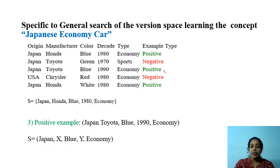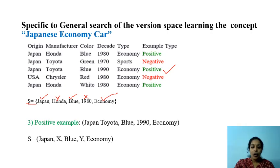Again we got a positive example, and our current hypothesis is S. We check whether we can accept this new example. Japan matches, but Honda versus Toyota does not match. Blue is matched. The decade does not match. Economy matches. Since both Honda and Toyota give positive examples, we generalize the manufacturer. Similarly, since both 1980 and 1990 give positive examples, we generalize the decade using a variable Y. Any variable can be used here.